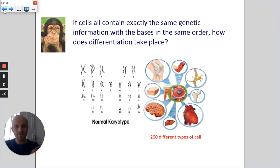So if that's the case, if cells all contain exactly the same genetic information with the bases in the same order, how does differentiation take place? How do you turn an unspecialized cell, a stem cell, into a specialized cell?